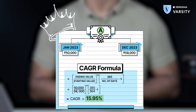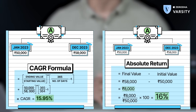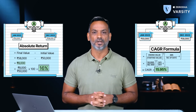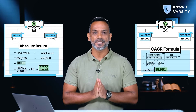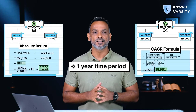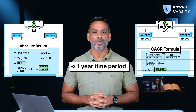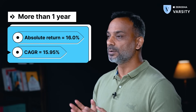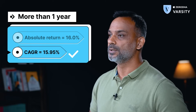Let's stick to Stock A for a bit. If you notice, the absolute return and the CAGR for Stock A are nearly the same at 16%. This is because both CAGR and absolute return will be the same as long as the time under consideration is exactly one year. But if the time is more than one year, then it's always better to look at the CAGR value as opposed to the absolute return.